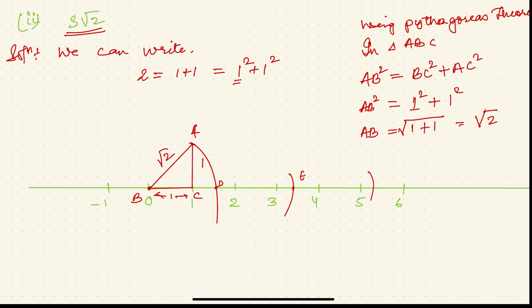After you mark like this, now you have reached a point EF. I don't know where it will lie, I hope it will lie over here. Now F is the point that will represent 3 root 2. That's it, BF.